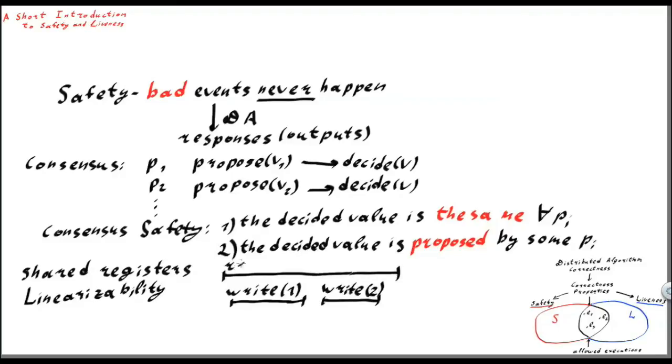Consider an execution where we have two write operations and one read operation. This execution satisfies the safety property of linearizability because it is possible to insert the linearization points in the following order, such that the first write comes first, then comes the read operation, and then comes the write operation. If we replace these three linearization points with corresponding operations, then we get the correct execution.